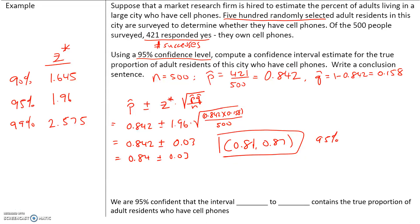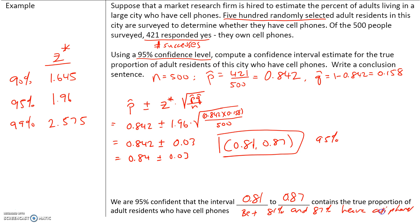This tells us that we are 95% confident that the interval 0.81 to 0.87 contains the true proportion of adult residents who have cell phones. That means between 81% and 87% of adult residents have cell phones, and we can say that with 95% confidence.